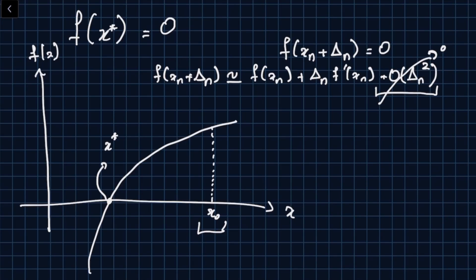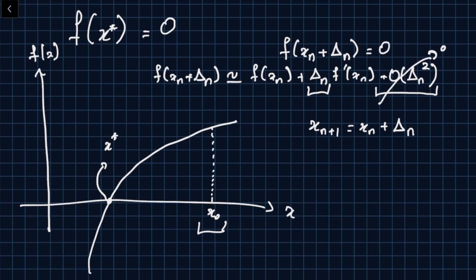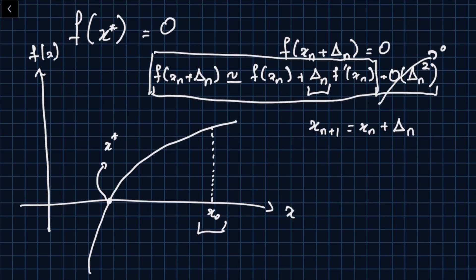We discard the higher-order term, keeping just the linear approximation. The reason is that we want a nice closed-form expression for delta_n, because it's delta_n that lets us update the next point: x_{n+1} = x_n + delta_n. Newton is one of the first methods to use this simple approximation to obtain a closed-form solution.